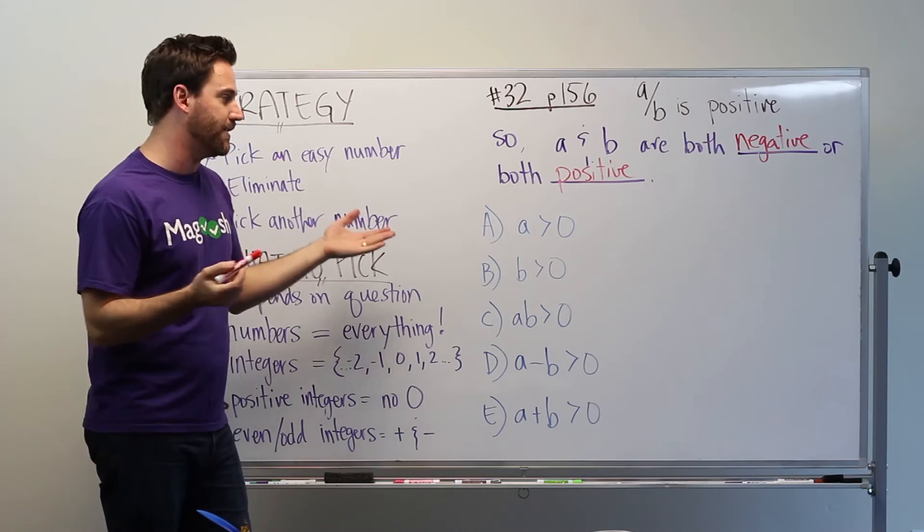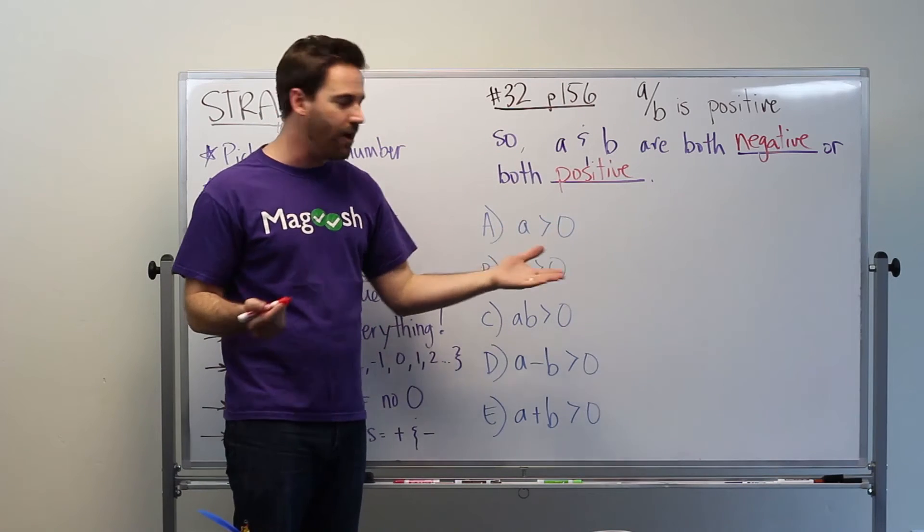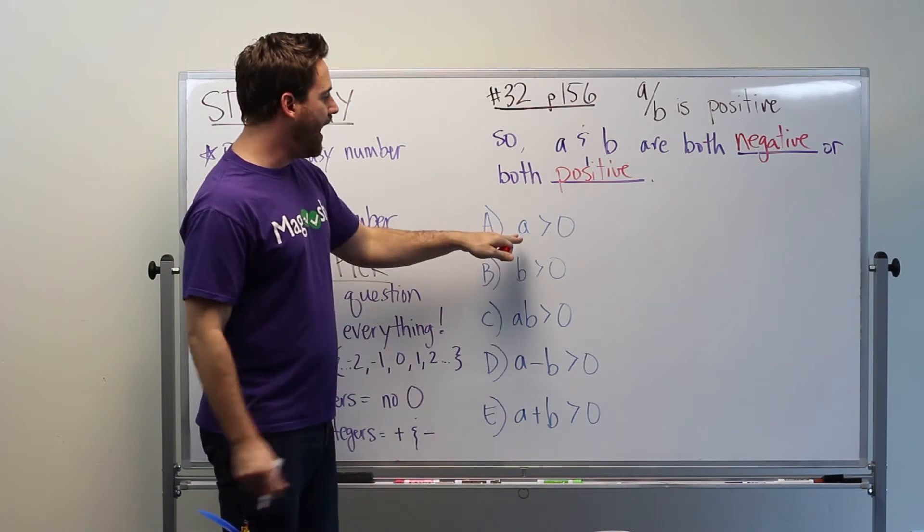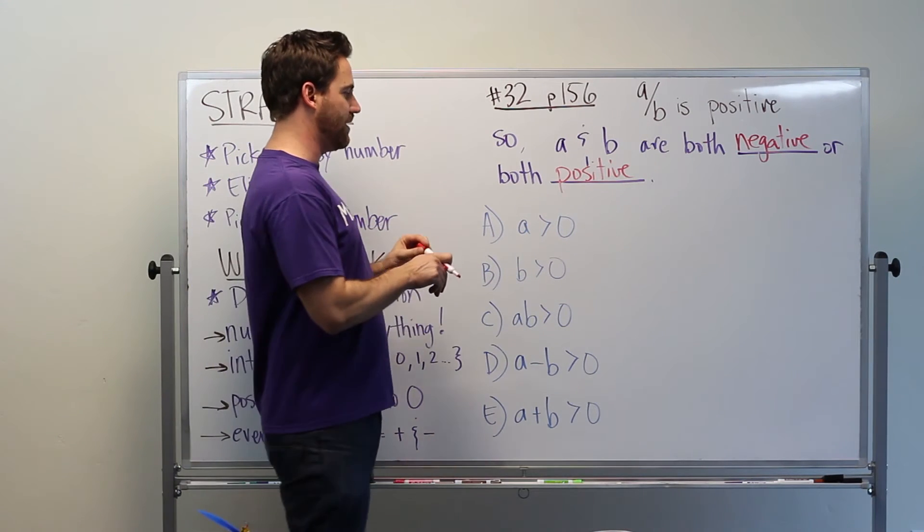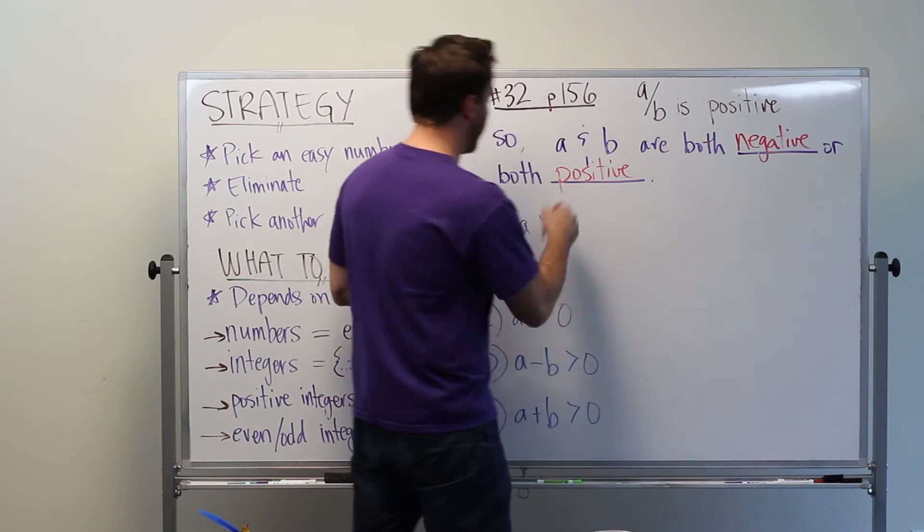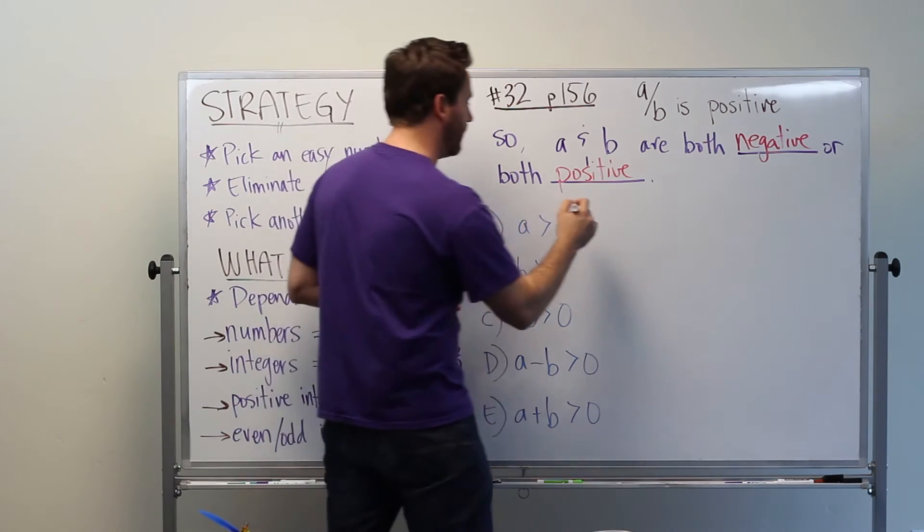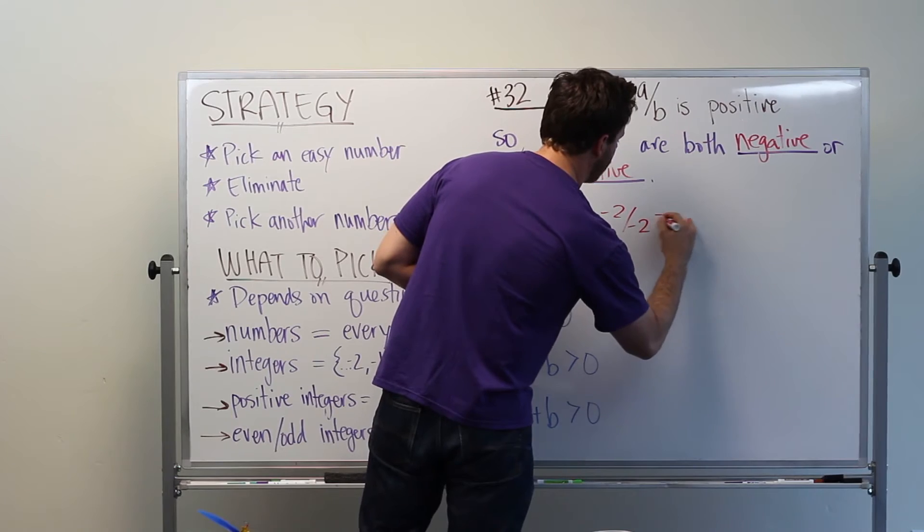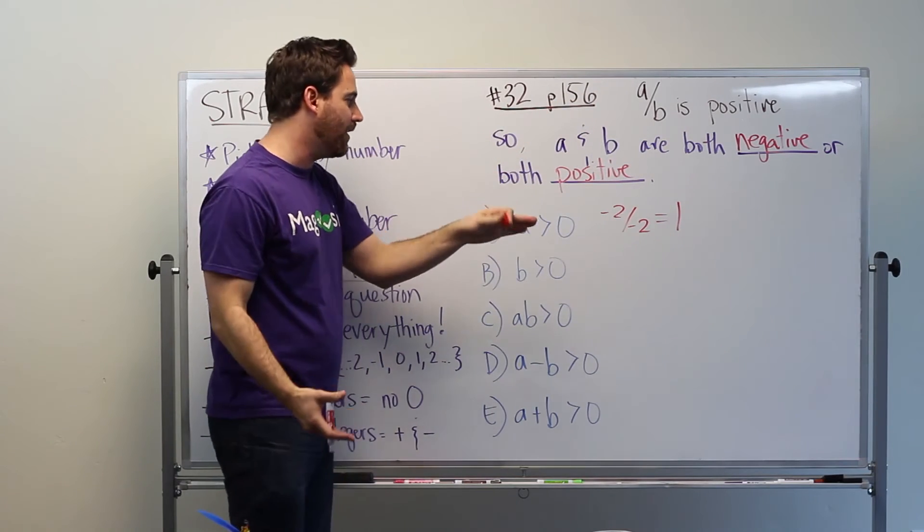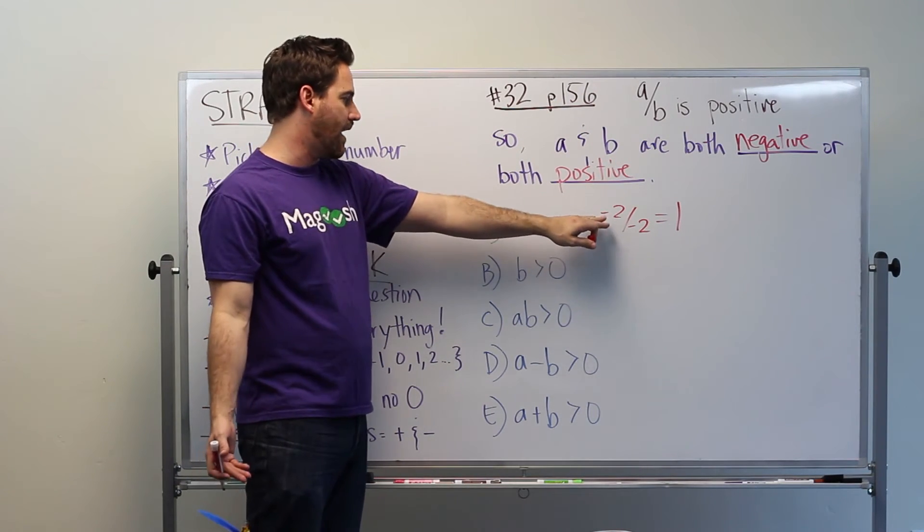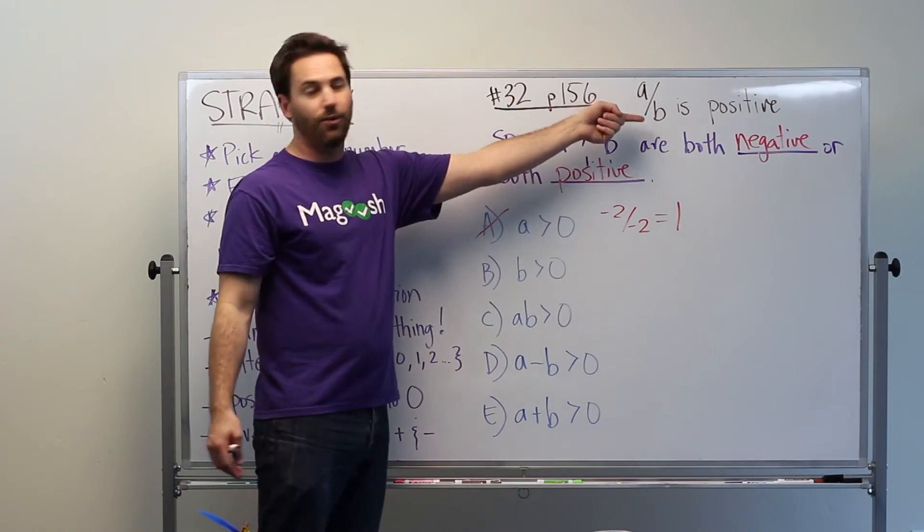Okay, so let's take a look at our answer choices. We're going to pick numbers and evaluate each of our answer choices as we go, plugging them into what we know and see what it tells us. So A is greater than zero. Okay, so if A is greater than zero, we have to know, is this true? Must this be true? So I'm going to try to disprove it. If we have negative two over negative two, that equals one, which agrees with the information that we're given. But A in this case is not greater than zero, it's below zero. So we would eliminate A, because this doesn't need to be true in order for this to be true.